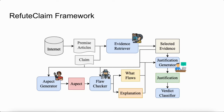This is our ReviewClaim framework. We collect premise articles from the internet, and the evidence retriever will retrieve the most relevant content and pass it to the flaw-checker. The flaw-checker then uses these aspects and retrieved evidence to determine the existence of flaws in the claim. Finally, the justification generator will generate justification for the fact-checking result, and the veracity classifier will output the classification label.